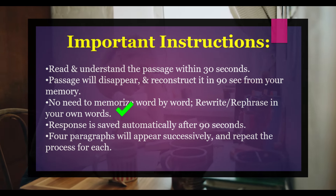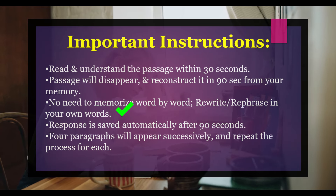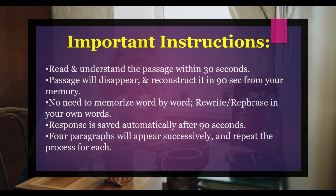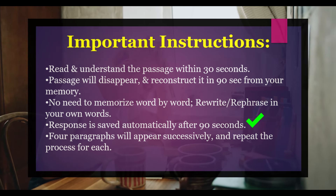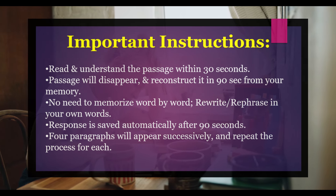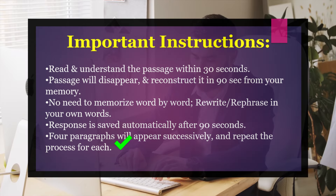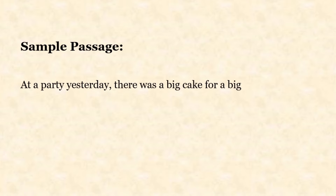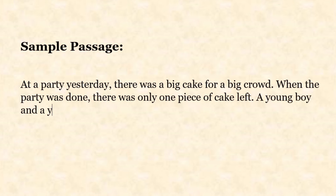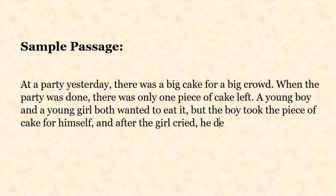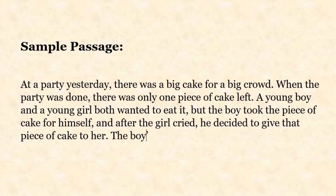As the passage disappears, nothing will remain on screen. Your task is to reconstruct the passage in your own words within 90 seconds. You don't need to memorize it word by word — you can rewrite it in your own words. After 90 seconds, your response will be saved automatically and you will get another passage. You will get a total of four paragraphs, one after the other. Here is a sample passage: 'At a party yesterday, there was a big cake for a big crowd. When the party was done, there was only one piece of cake left. A young boy and a young girl both wanted to eat it, but the boy took it for himself, and after the girl cried, he decided to give it to her. The boy's parents were pleased to see that.'